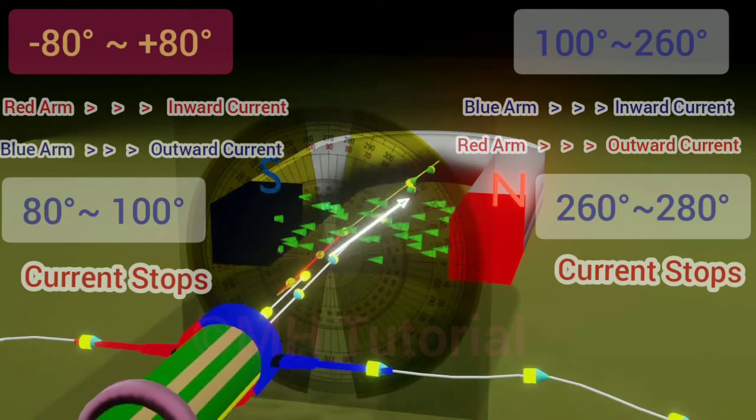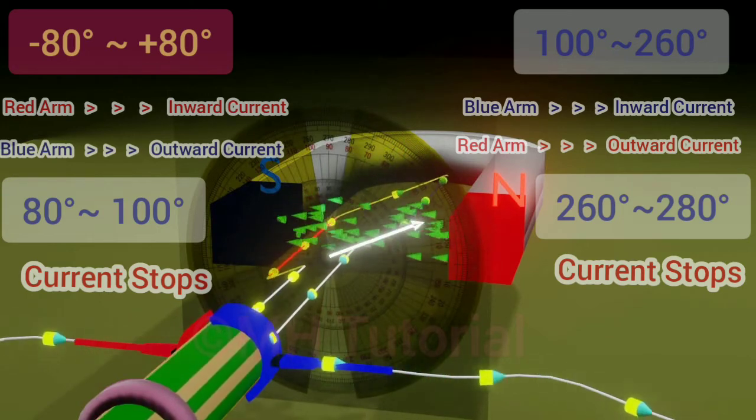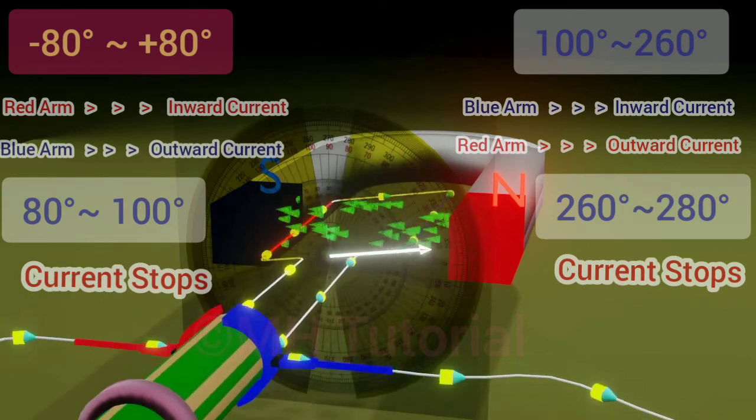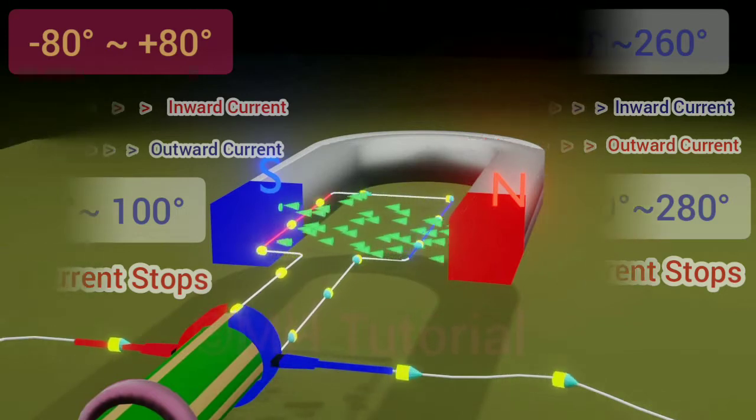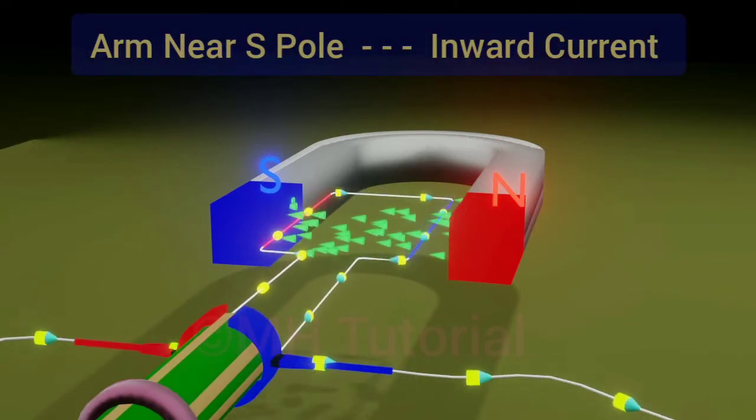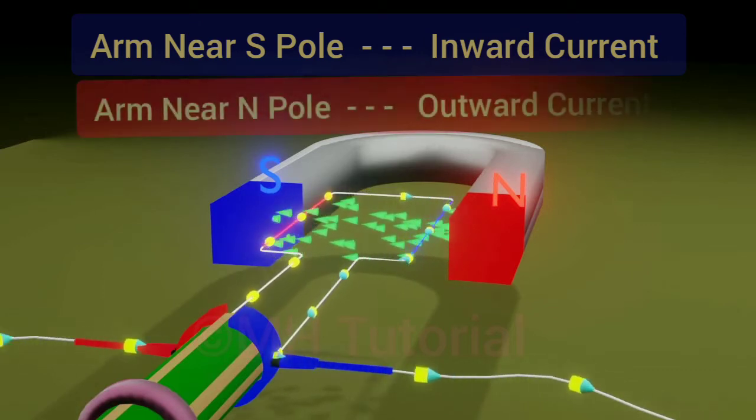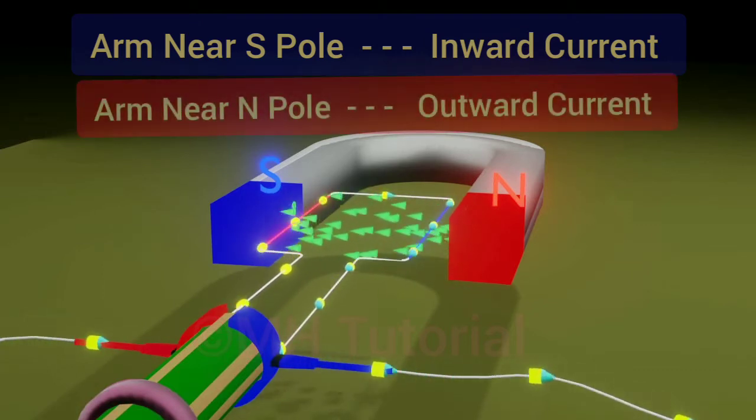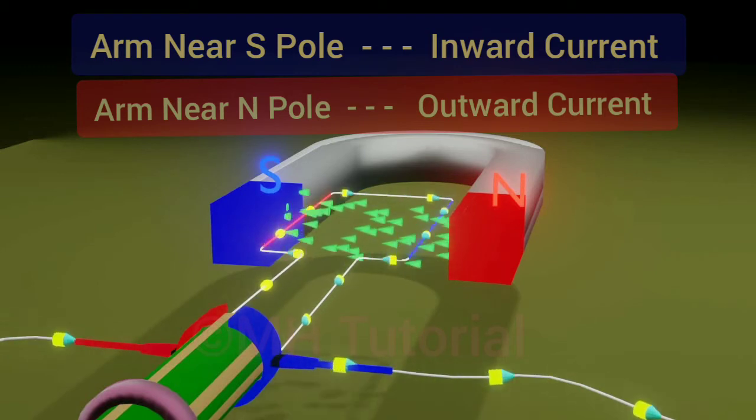Note that commutators can start, stop, or change the direction of current. Also note that whichever arm comes closer to south pole, its current will be inwards, and the arm near the north pole will flow current outwards. That's the job of the commutator.